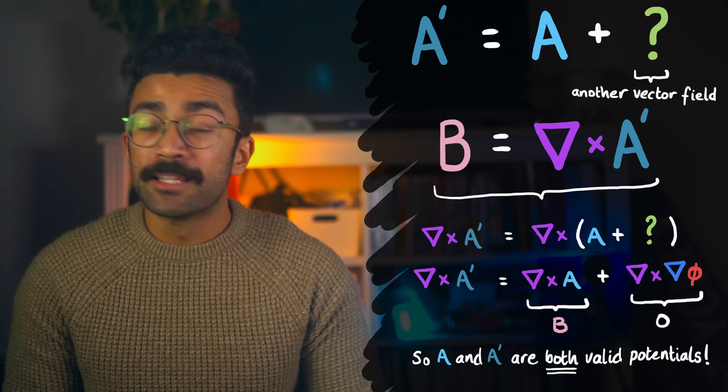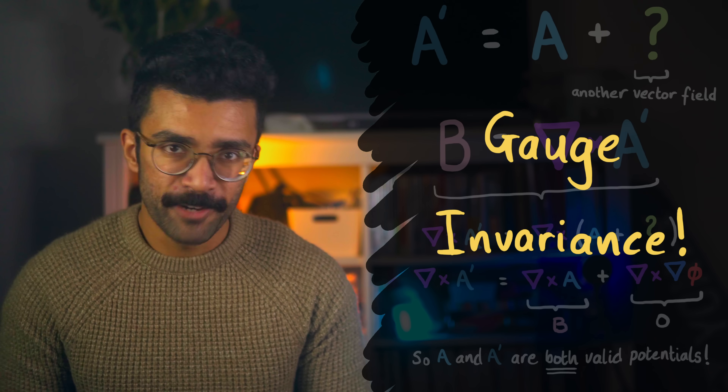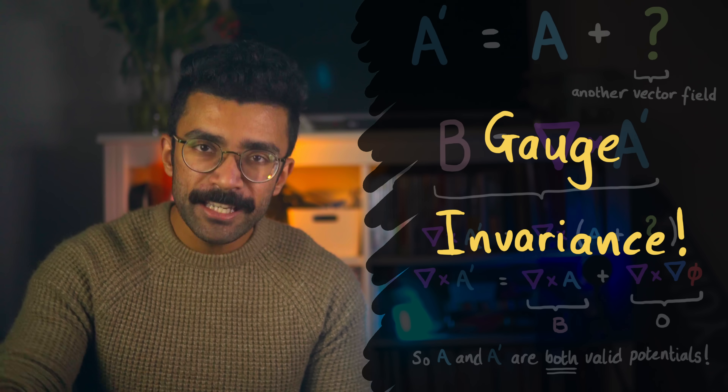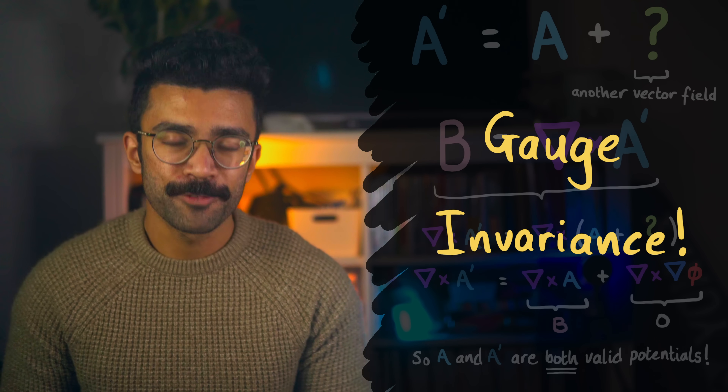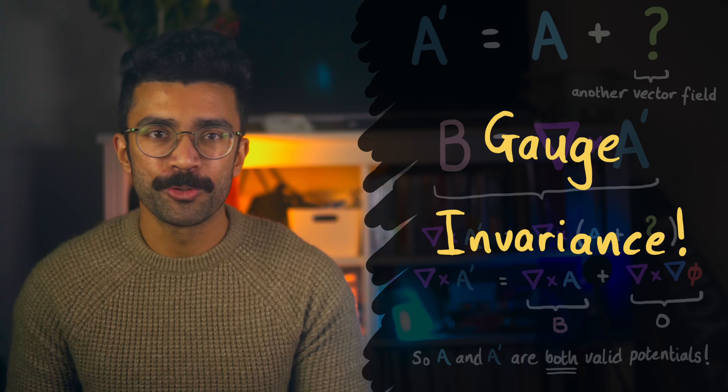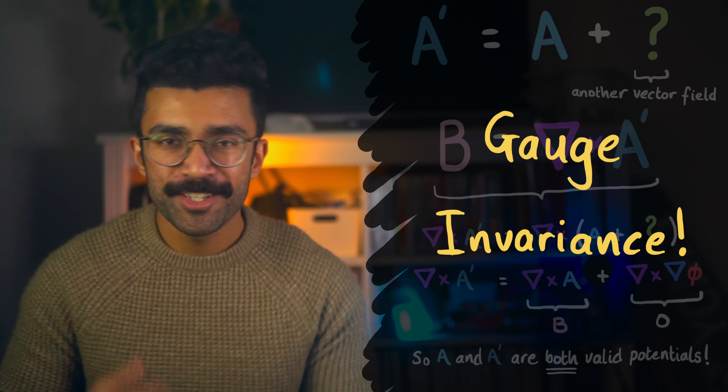Remember, this only works for any added field that can be written as the gradient of a scalar field — it doesn't matter what the scalar field is. And the point is, this is gauge invariance. The B field is invariant, or unchanging, regardless of what gauge or measure we choose to be A. Gauge invariance was discovered by Hermann Weyl and helped form some of the backdrop for solving complicated problems in electromagnetism, relativity, and loads of other theories.